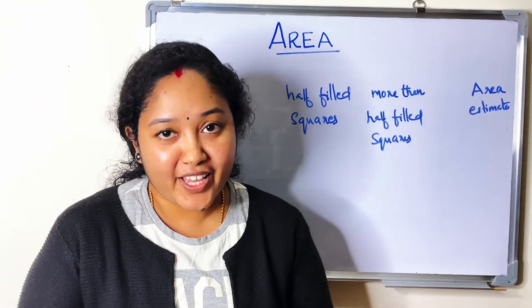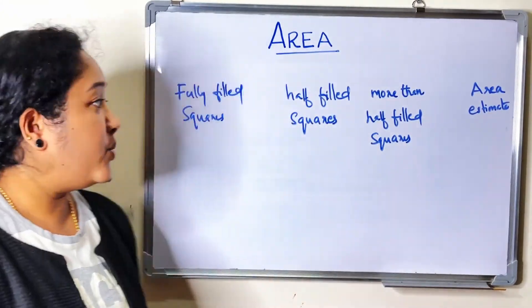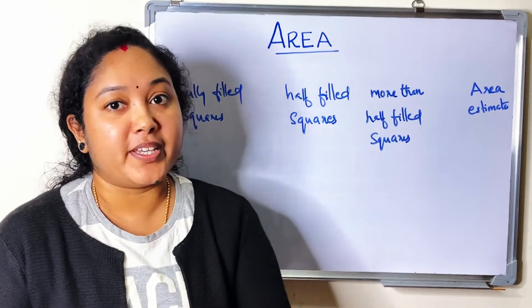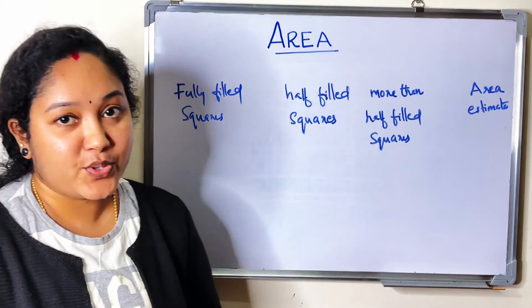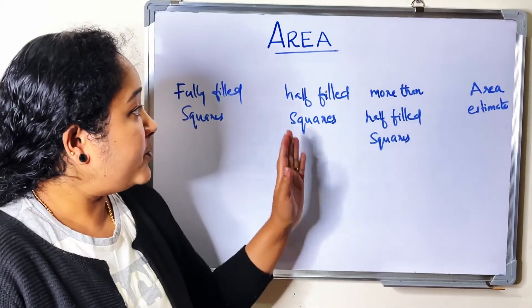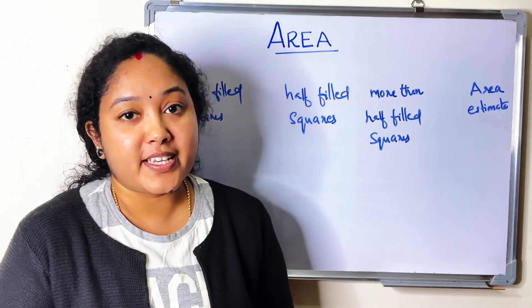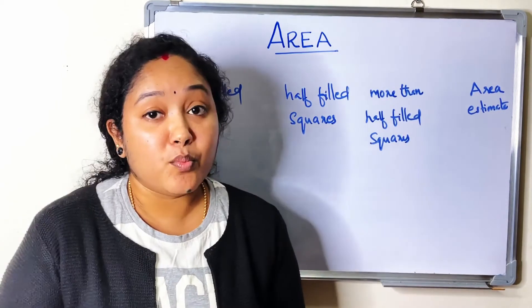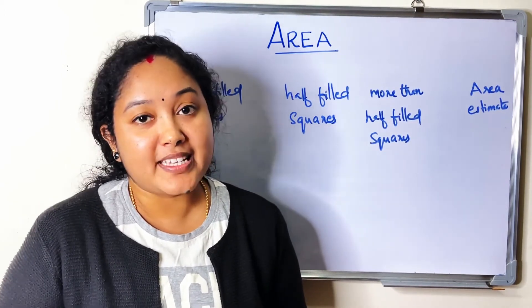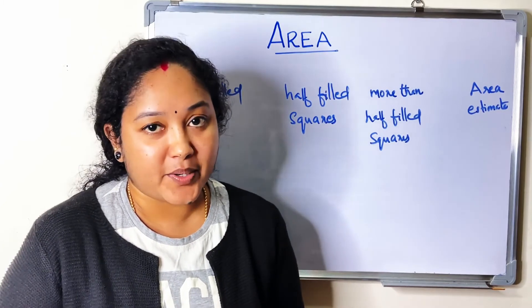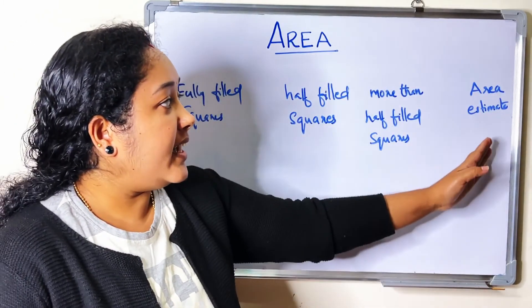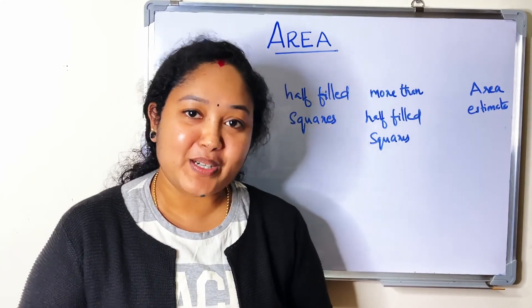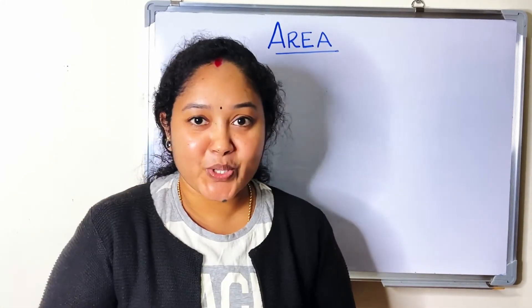To summarize, to find the area of irregular shapes: 1 — the area of one full square is taken as 1 square unit; 2 — half of a square is taken as half a square unit; 3 — more than half of a square is taken as 1 square unit. Then add all the area estimates together to get the area of the irregular shape. Thank you.